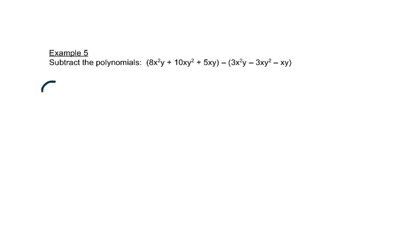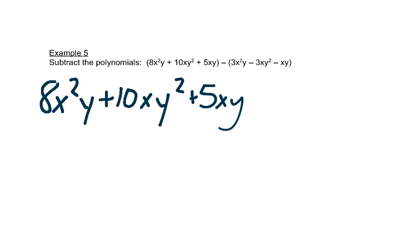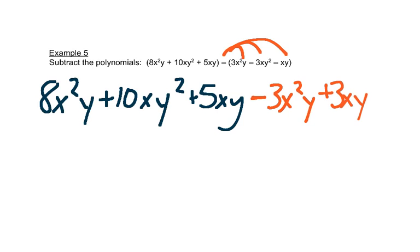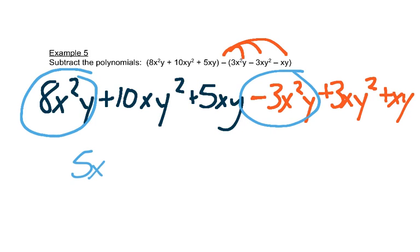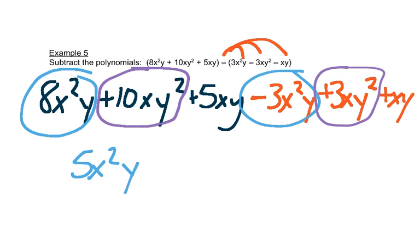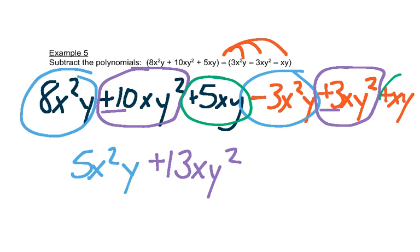In the next example, the first set of parentheses has nothing to distribute, so we can just write it without them. But in the second set, the minus sign needs to be distributed — it's like having a negative 1 in front, which changes the signs for everything inside. So we write minus 3x squared y plus 3xy squared plus xy. Then we combine like terms: 8 minus 3 is 5x squared y; 10 plus 3 is 13xy squared; and 5xy plus 1xy is 6xy.